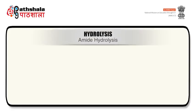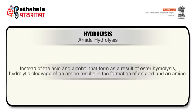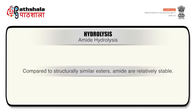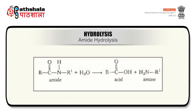The second pathway is amide hydrolysis. Pharmaceutical compounds containing an amide group can undergo hydrolysis in a manner similar to that of an ester-type compound. Instead of the acid and alcohol that form as a result of ester hydrolysis, hydrolytic cleavage of an amide results in formation of an acid and an amine. Compared to the structurally similar esters, amides are relatively stable. Pharmaceuticals such as niacinamide, phenethicillin, barbiturates and chloramphenicol degrade by amide hydrolysis. The general scheme employed in amide hydrolysis is shown on screen.